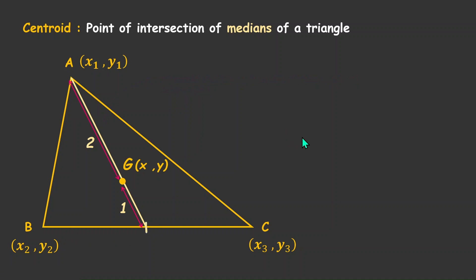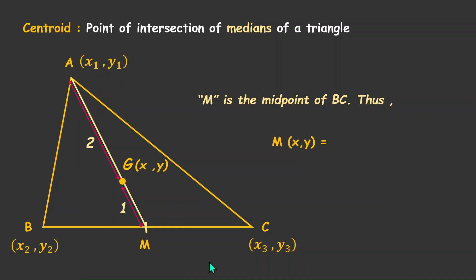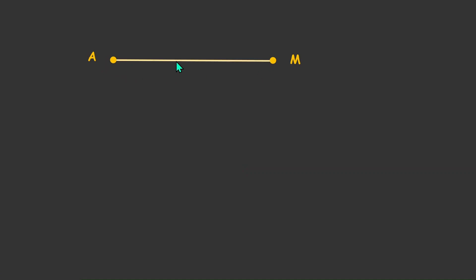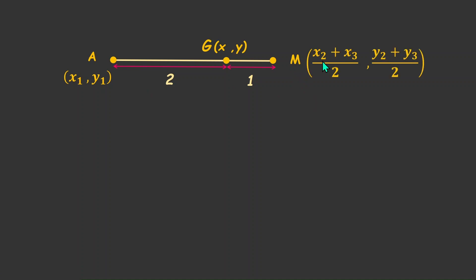Since it is the midpoint of BC, let it be M. Then M is the midpoint of BC, and the coordinates of M would be (x2 + x3)/2, (y2 + y3)/2. Now the question is straightforward. We have a line with two points A and M, and a point G in between that cuts this line in the ratio 2:1. We know the coordinates of A as (x1, y1) and M as ((x2 + x3)/2, (y2 + y3)/2), so we have all the information needed to apply the section formula.